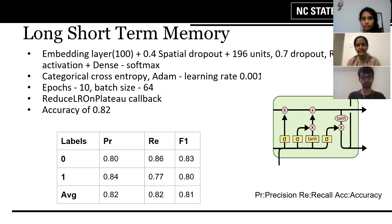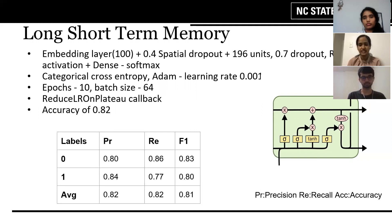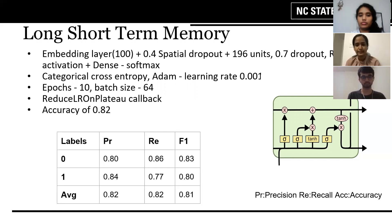LSTM is designed to overcome the vanishing gradient problem. The first layer is an embedding layer of dimension 100, followed by a spatial dropout layer with a dropout rate of 0.4, which helps promote independence between one-dimensional feature maps instead of just individual elements. The LSTM layer has 196 units, a dropout rate of 0.7, and is activated by the ReLU function, followed by a fully connected layer with two neurons activated by softmax serving as the output layer.